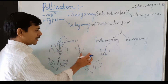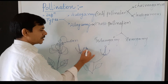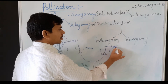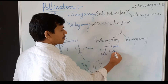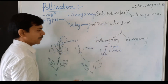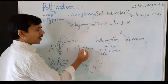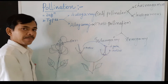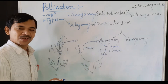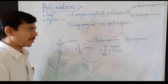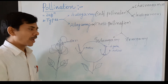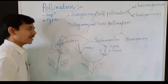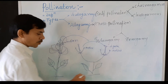In the next diagram, consider this: here is an anther and here is a stigma. The transfer of pollen grains from the anther of one flower to the stigma of a different flower on another plant — this is one plant and this is another plant — represents cross-pollination.